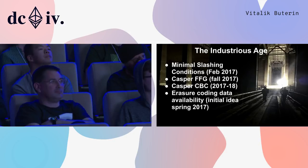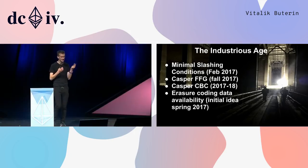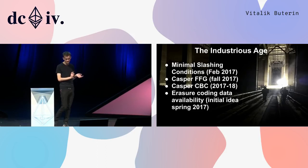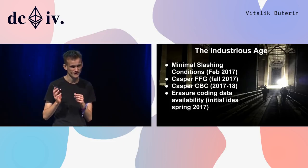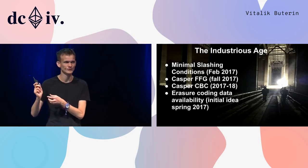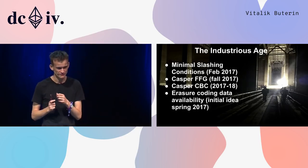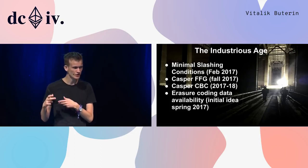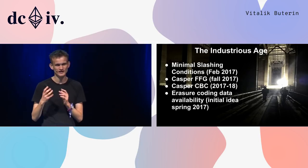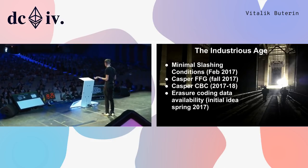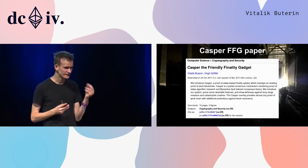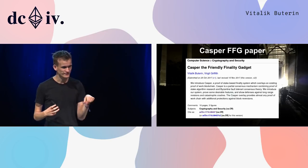After this we started making huge progress very quickly. During all of this time there were different strands of research going on — some around proof of stake and doing base-layer consensus more efficiently, some around scalability and sharding base-layer consensus, some around improving the efficiency of the virtual machine, some around abstraction that would allow people to use whatever signature algorithms they wanted for their accounts, which could provide post-quantum security and make it easier to build privacy solutions, along with protocol economic improvements.